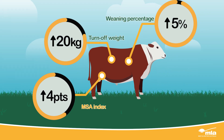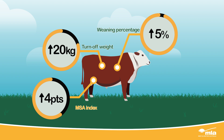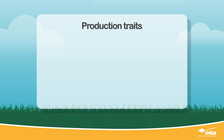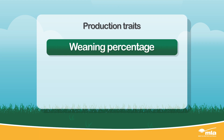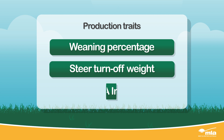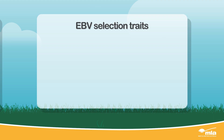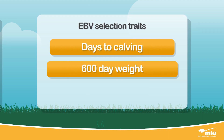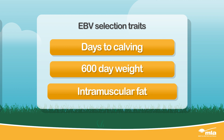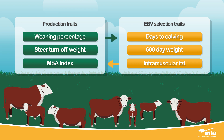With your breeding objectives identified, you can now match the production traits of importance with the EBV traits that will deliver the genetic improvements you need. Your production traits of importance might be weaning percentage, steer turnoff weight, and MSA index. Your matching EBV selection traits would be days to calving, 600-day weight, and intramuscular fat. You've now made trait selection decisions that will help identify which bulls meet the needs of your herd.